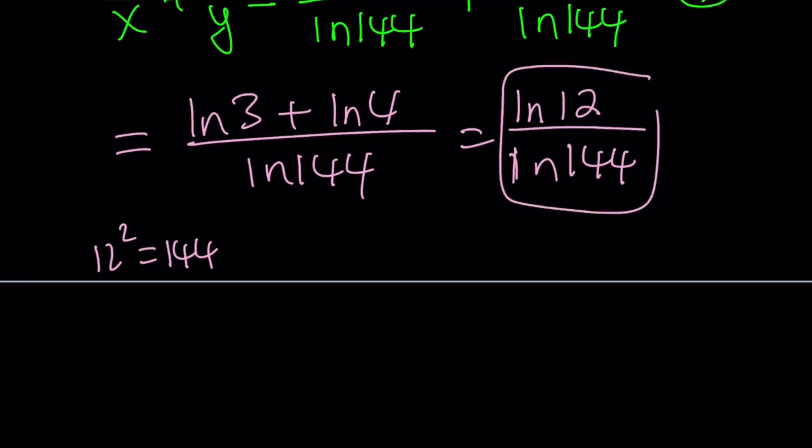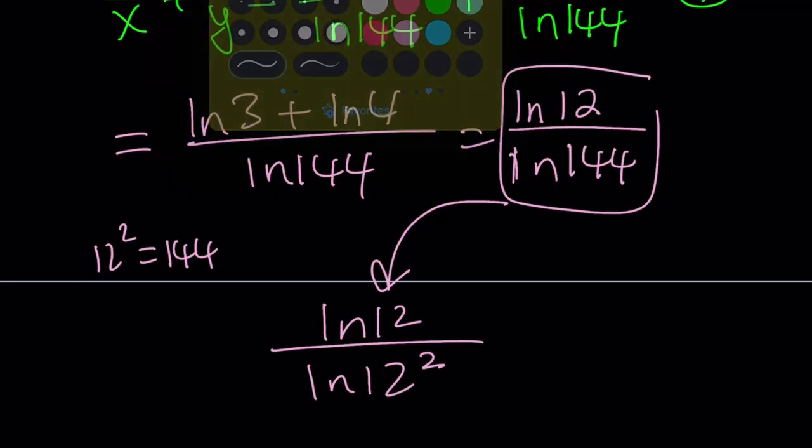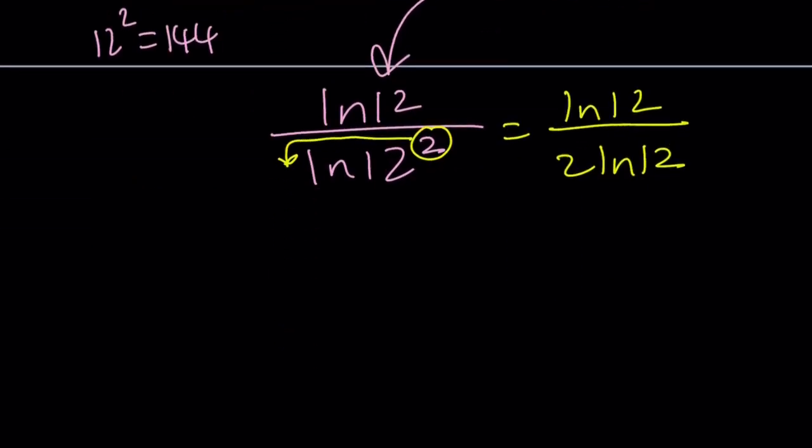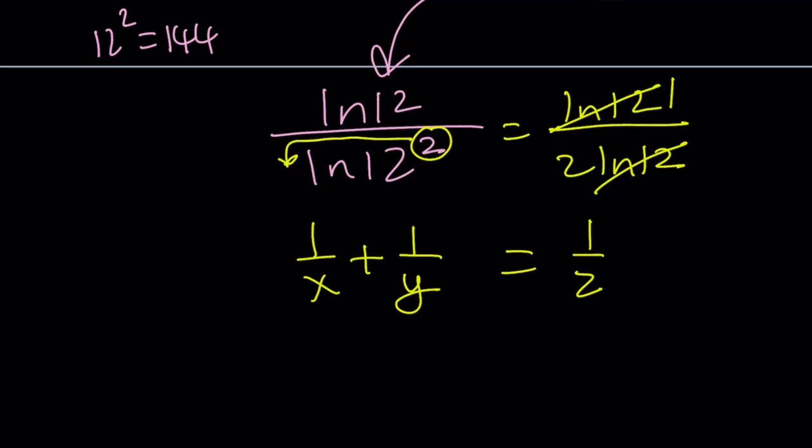So from here, I can write the ln 144 as ln 12 squared. And another nice property of logs pops up. We can bring this down and write this as ln 12 over 2 times ln 12. That's the nice thing about logs. You can bring the powers down and this gives us a really nice, simple expression. The answer is 1 half. But what was I looking for? 1 over x plus 1 over y. And where does x and y come from? Well, we were given 3 to the x equals 144 and 4 to the y equals 144.